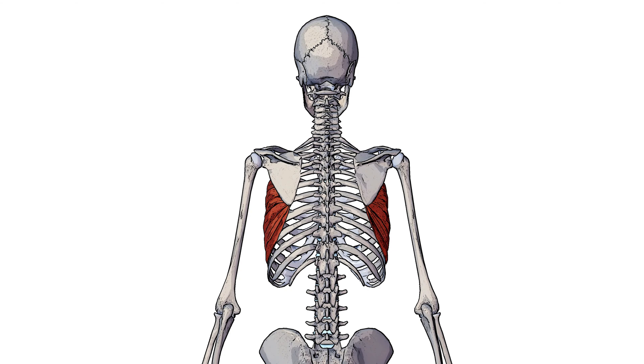Swapping to a posterior view now, you can see the serratus anterior is deep to the scapula but it's also deep to the subscapularis muscle as well, meaning that the scapula and the subscapularis are covering that surface of the serratus anterior.